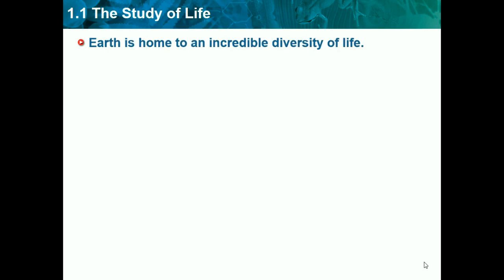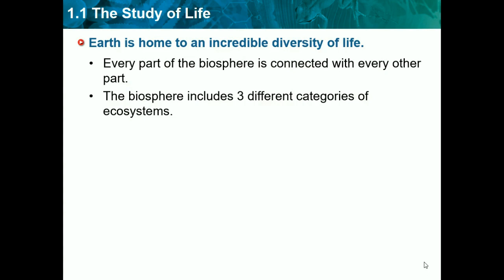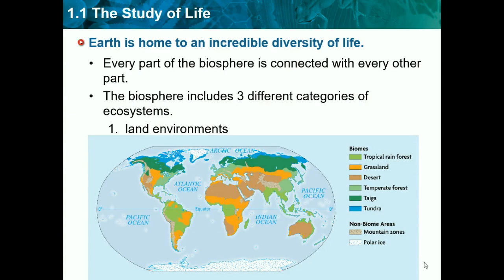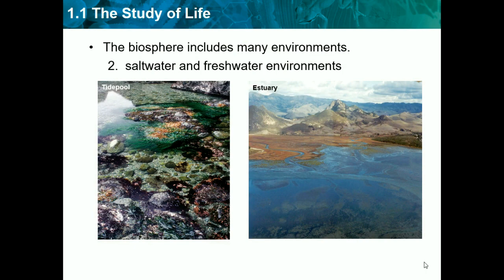Earth is home to incredible diversity of life. Every part of the biosphere is connected with every other part, and there are three major ecosystems, or parts of the biosphere. The first is land environments, which includes all the continental crust on Earth. The second is salt water and fresh water environments, which includes bodies of water like tide pools, estuaries, rivers, and lakes. The third is portions of the atmosphere. All three of these environments interact with one another through a variety of cycles, like the water cycle or the carbon cycle, which we will learn later.